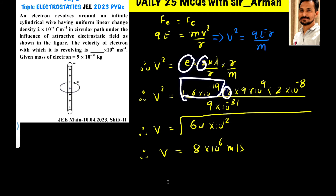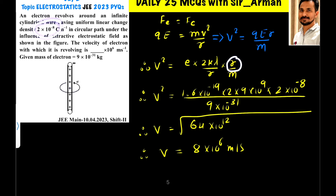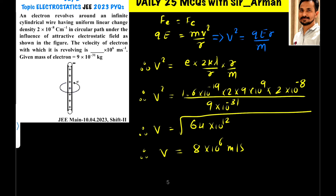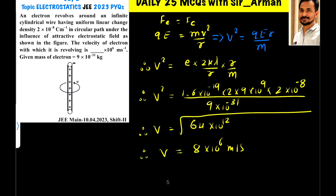The value of Coulomb's constant k is 9×10⁹, and lambda λ is given as 2×10⁻⁸ — that is the linear charge density, not the radius r. The r's cancel. The mass of the electron in the denominator is 9×10⁻³¹. Now 9 and 9 cancel, and 2×2 = 4, and 4×1.6 = 6.4.